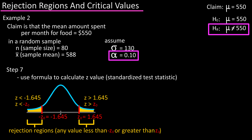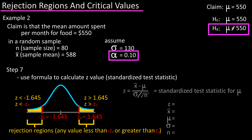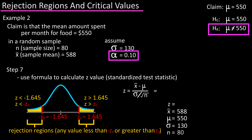Step seven: use the formula and calculate the z-value. In our example, x-bar, the sample mean, equals 588; mu, the hypothesized population mean, equals 550; sigma, the population standard deviation, equals 130; and n, the sample size, equals 80. Plugging these into the formula, we get z equals 2.614.